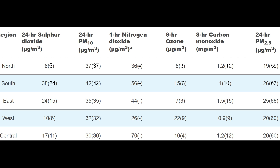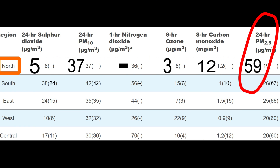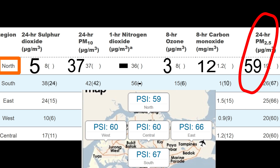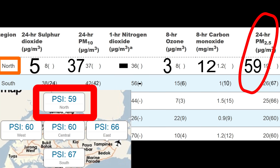So for example, on November 8th at 10am in the north, the 6 pollutant PSIs were 5, 37, not reported, 3, 12, and 59. Of these 6 pollutant PSIs, the worst — or the biggest — was the PM2.5 PSI, which was 59. So the 24-hour PSI for the north was simply 59.